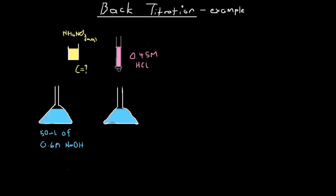Here we have an example of a calculation involving a back titration. I've got a solution of ammonium nitrate. Ammonium is a very weak acid, and so we're not going to be able to titrate it directly with a base — we won't get an obvious enough equivalence point. So ammonium is very weak, and so what we're going to do is a back titration.